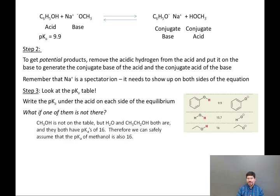And CH3OH, it's not on the pKa table. So what do you do? What do you do if one of them is not there? Well, what are on the pKa table are H2O and CH3CH2OH. And you see that both of those, at least rounded to the nearest whole number, have a pKa of 16. Therefore, you can safely assume that the pKa of methanol is also 16.